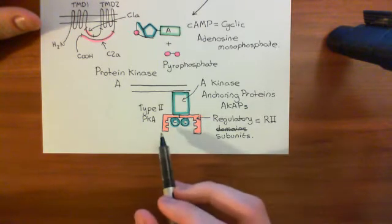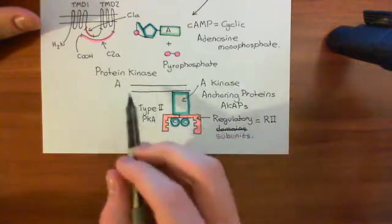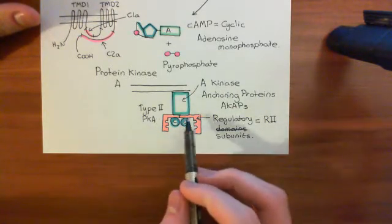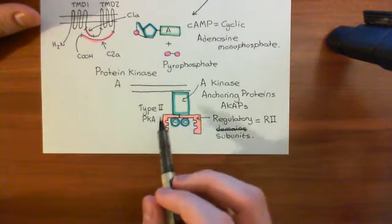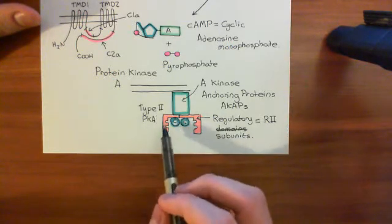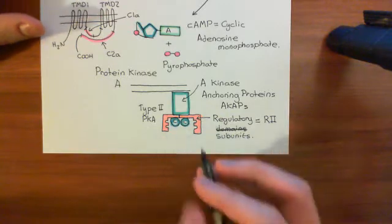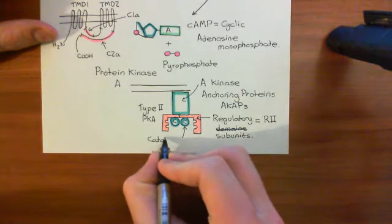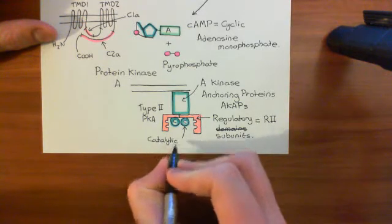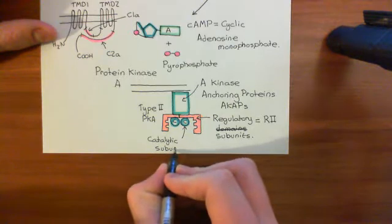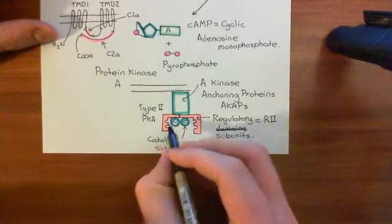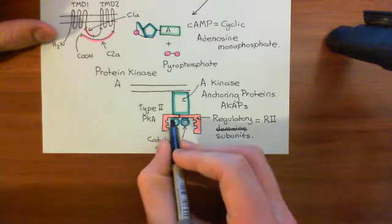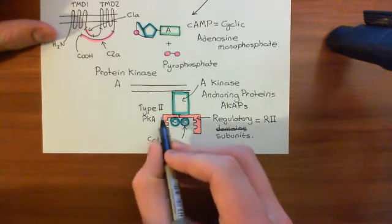These type 2 protein kinase A complexes are hence bound near the inner leaflet of the phospholipid bilayer. Type 2 protein kinase A, in its inactive form, consists of two type 2 regulatory subunits along with two catalytic subunits, shown here in blue. You'll see that the regulatory subunits have two invaginations each.